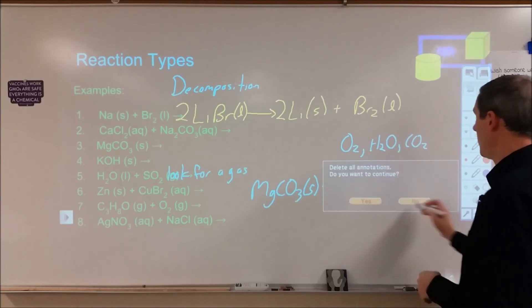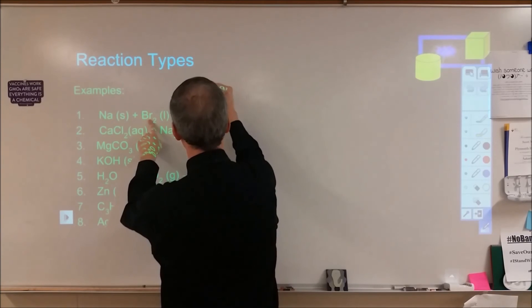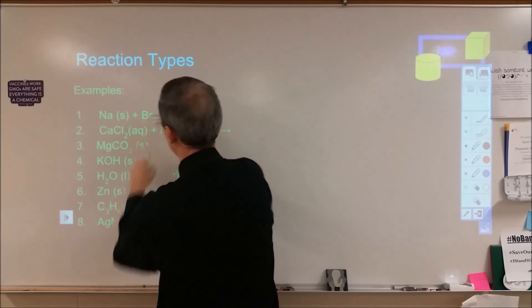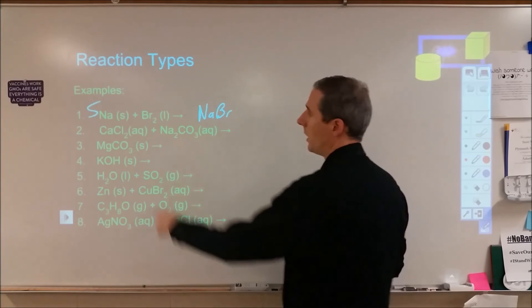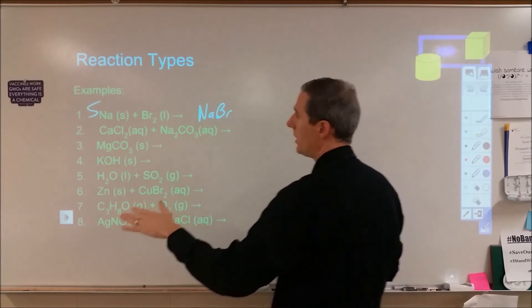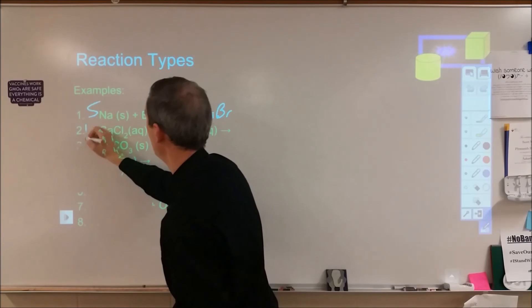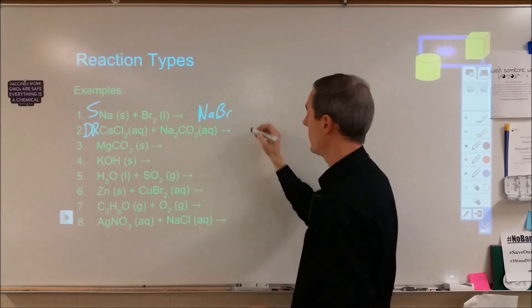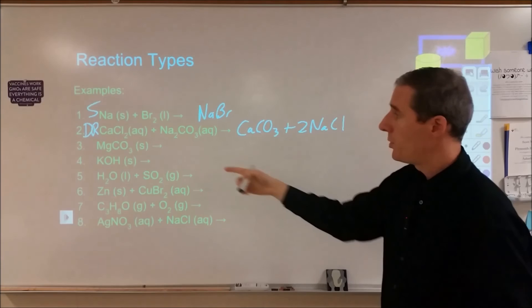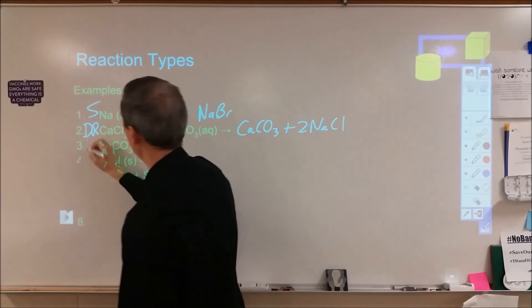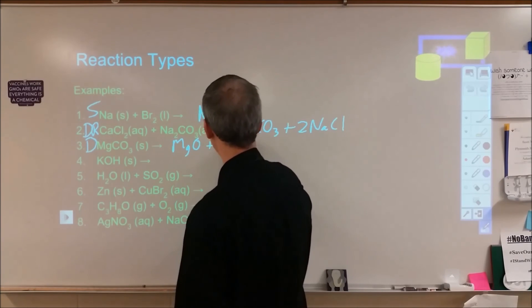Let's go through some examples. Element plus element — that's going to be a synthesis reaction, producing sodium bromide. Compound plus compound, with a polyatomic ion and a chloride — that's going to be double replacement, so we're going to make calcium carbonate and sodium chloride. MgCO3 is a single compound, so that's decomposition — it's going to make magnesium oxide and carbon dioxide gas.